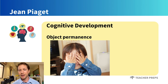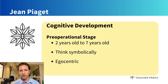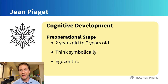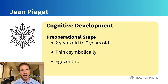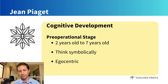The next stage is the pre-operational stage, which happens from two years old to seven years old. This is when children begin to think symbolically and learn to use words and pictures to represent objects. Children at this stage tend to be more egocentric and struggle with understanding other people's viewpoints.